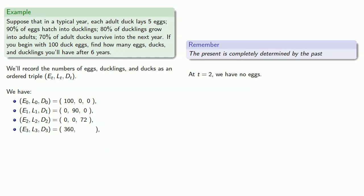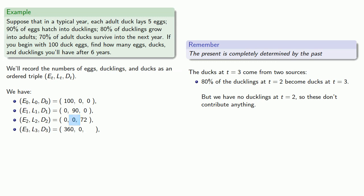At t equals two, we have no eggs, and so we have no ducklings at t equals three. The ducks at t equals three are going to come from two sources. First, 80% of the ducklings at t equals two become ducks at t equals three, but we have no ducklings at t equals two, so these don't contribute anything. Meanwhile, 70% of the ducks at t equals two survive. And that means they become... oh right, it's just a duck. So we have 70% of 72, or about 50 ducks at t equals three.